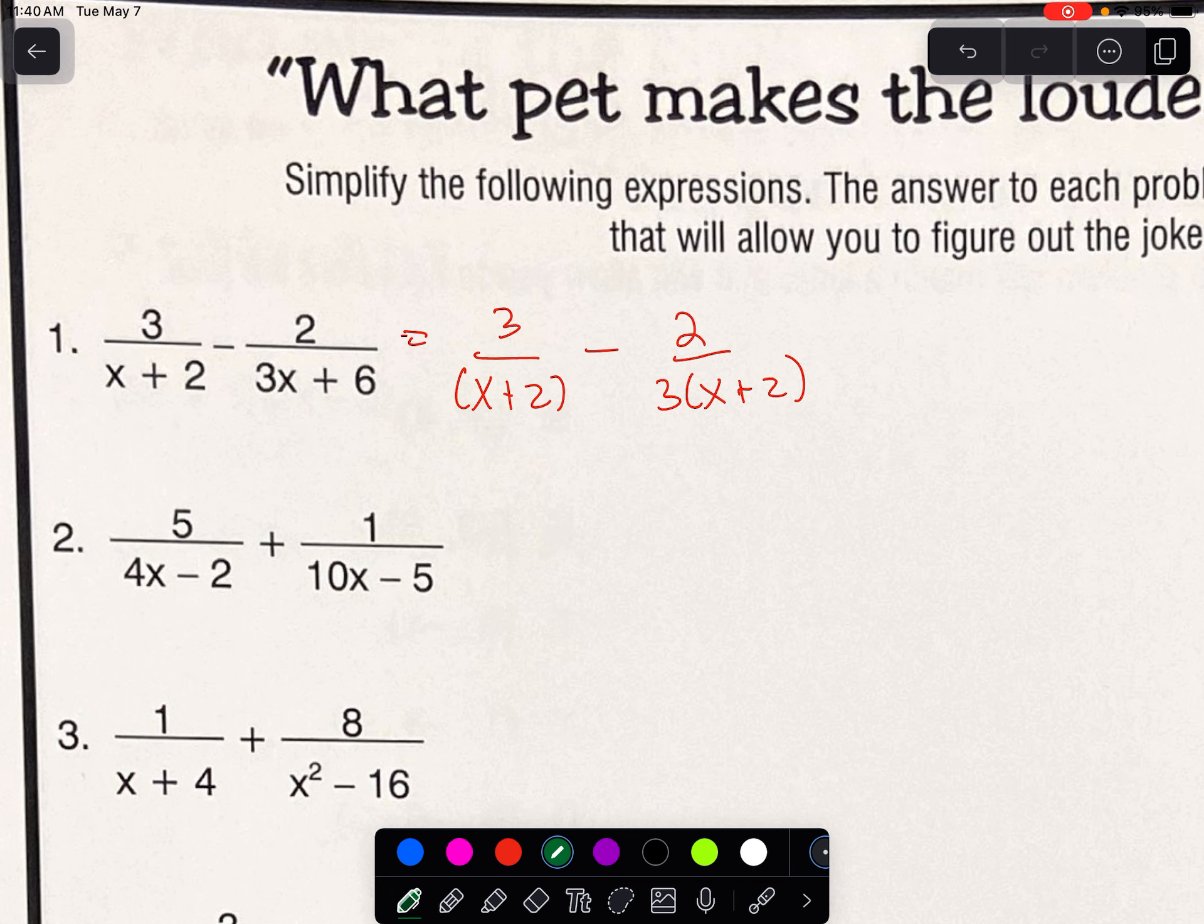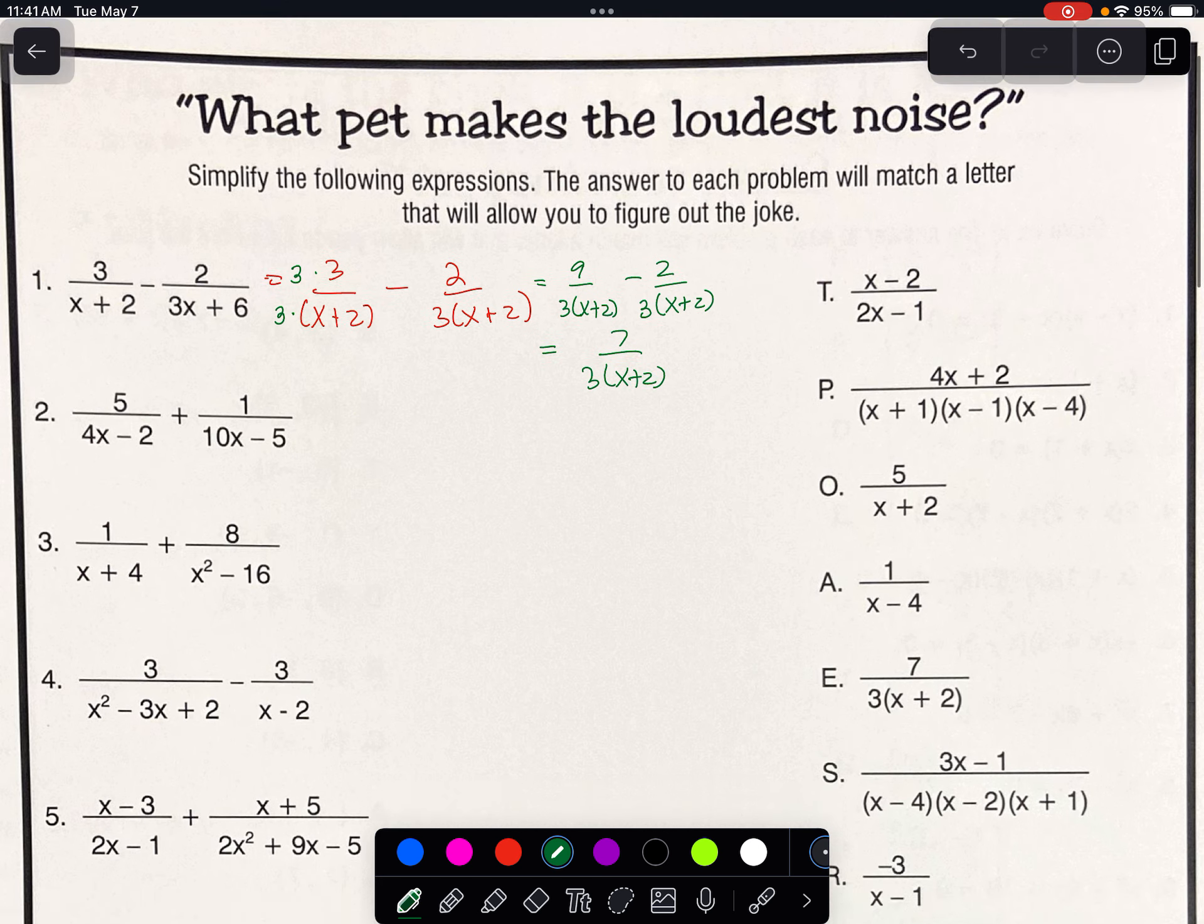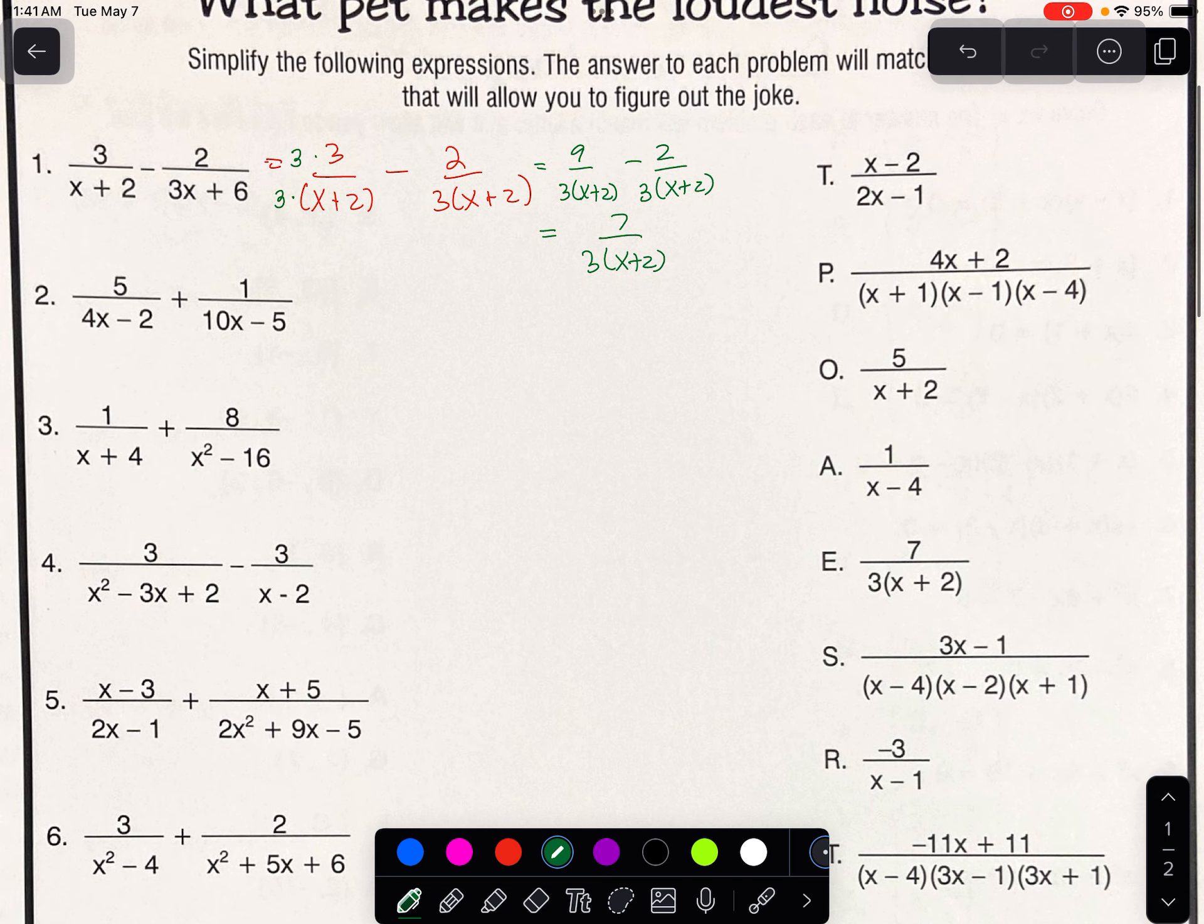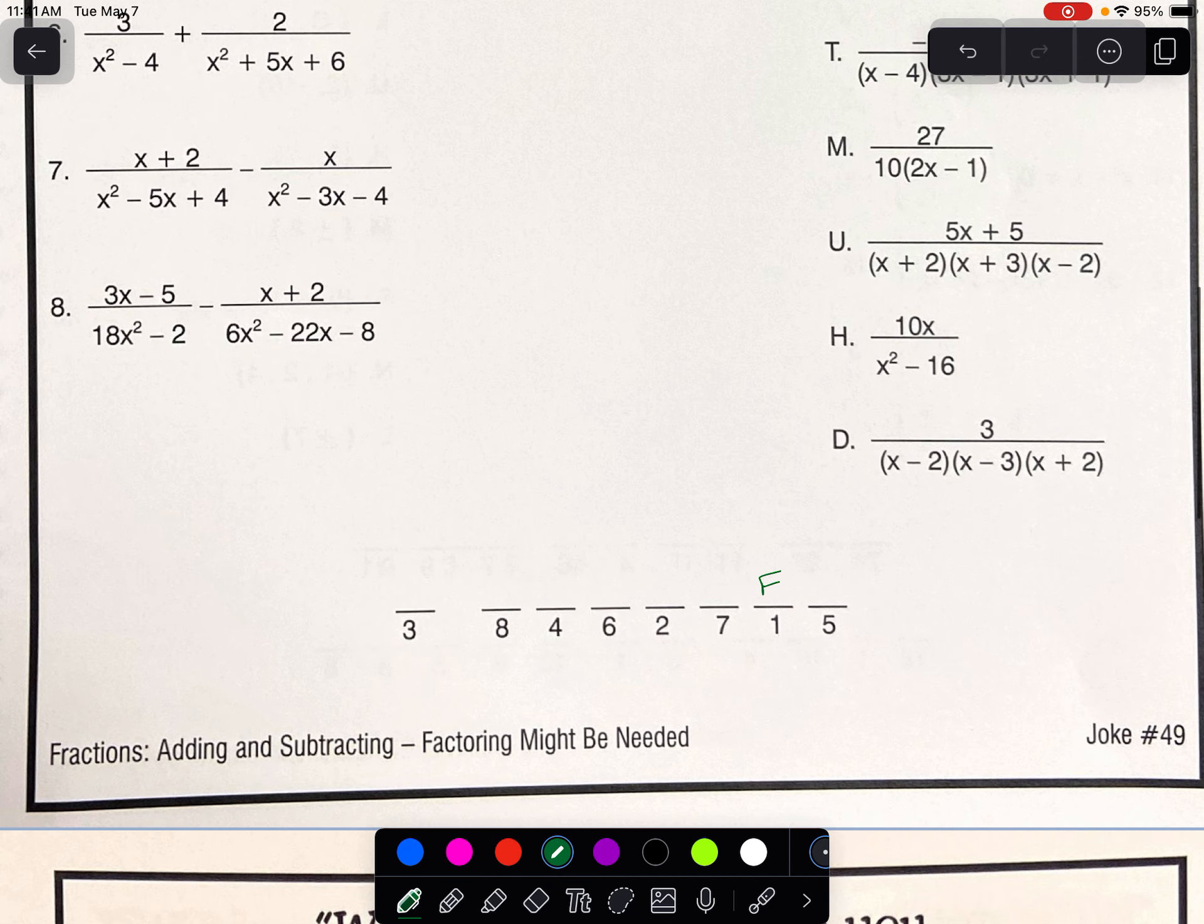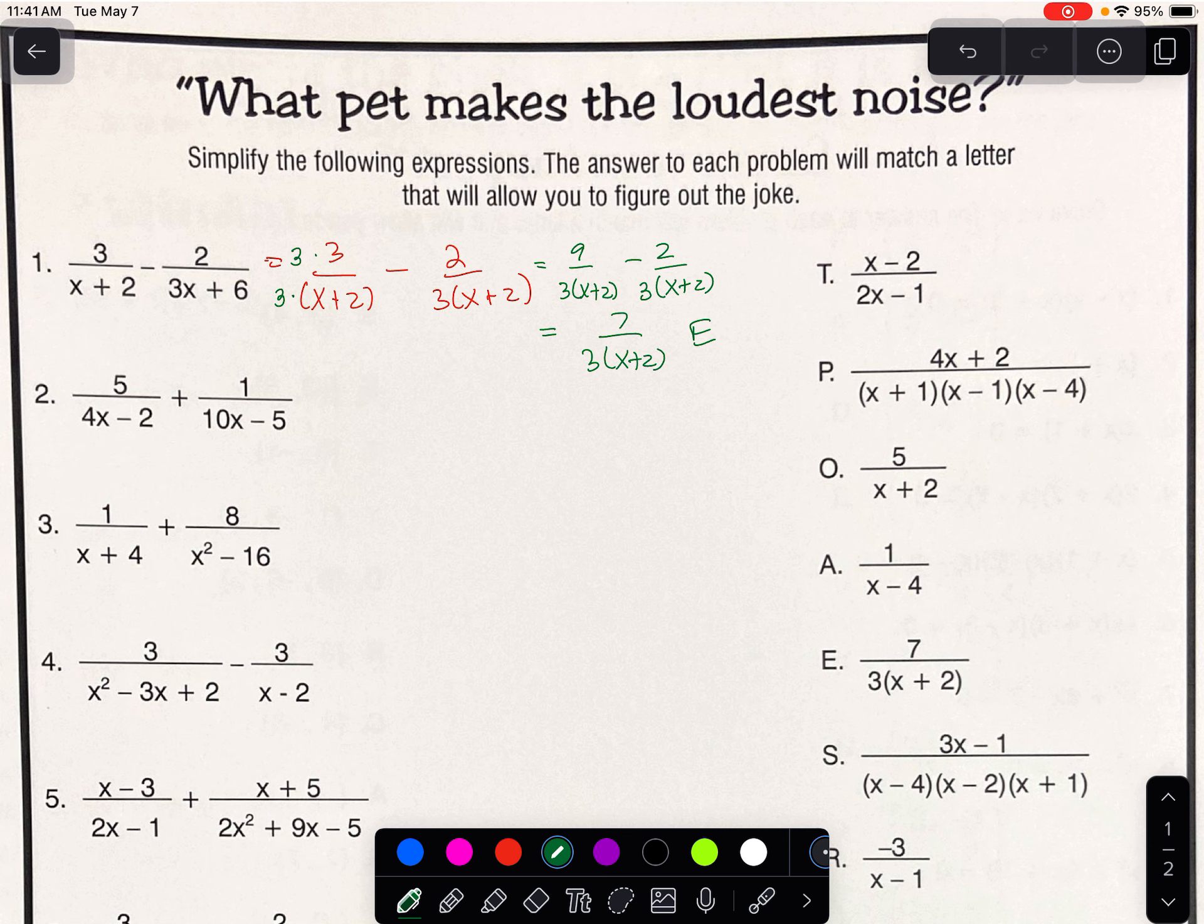That means that the only factor that's missing in one of our fractions, our first fraction needs a 3. And so then we would have 9 over 3 times the quantity of x plus 2 minus 2 over the quantity of 3 times x plus 2, which equals 7 over 3 times the quantity of x plus 2. They have put all of their fraction denominators in expanded factored form, so leave your denominators like that. Number 1 is an E.